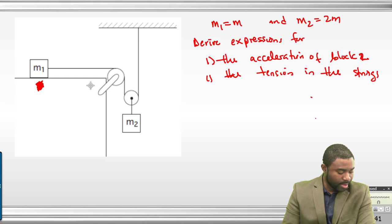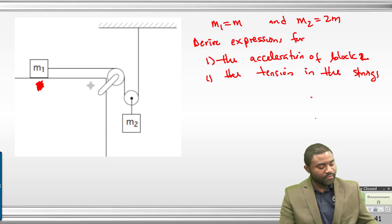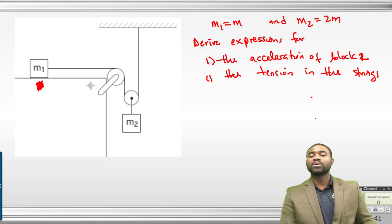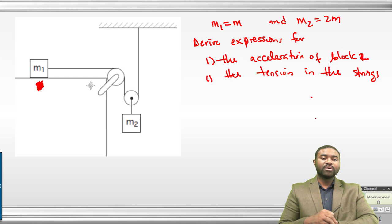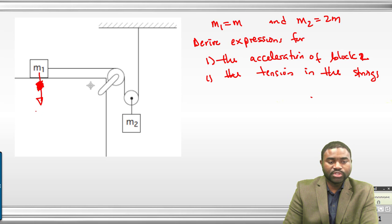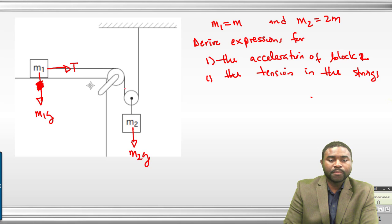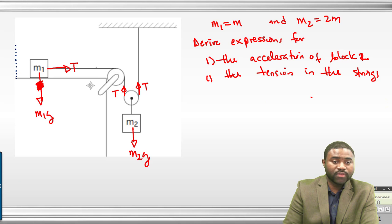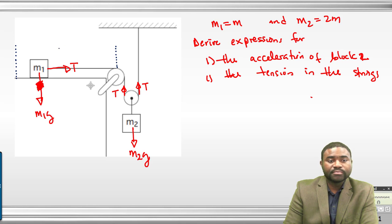The very first thing, whenever you are given a problem like this, is to draw a free body diagram. We will draw the forces on the diagram here — this is M1G, that is T, M2G, that is T, and that is T. Observe something: let's say the block starts moving. The distance from here to here, let's call it D.